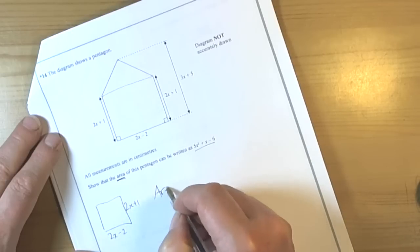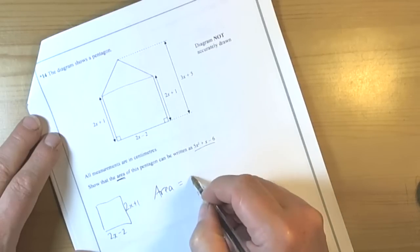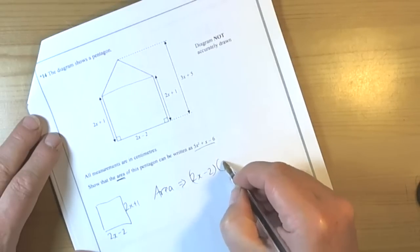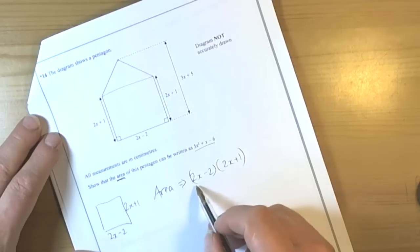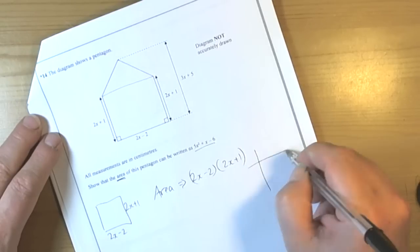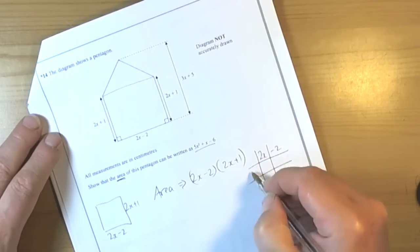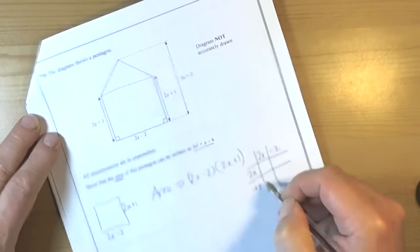To calculate the area of that then we'd be doing 2x take away 2 times 2x plus 1, multiplying two brackets. So lots of different ways of doing this. Some people like the grid so I'll do the grid and others prefer foil which does the same thing but just in a more formal way.